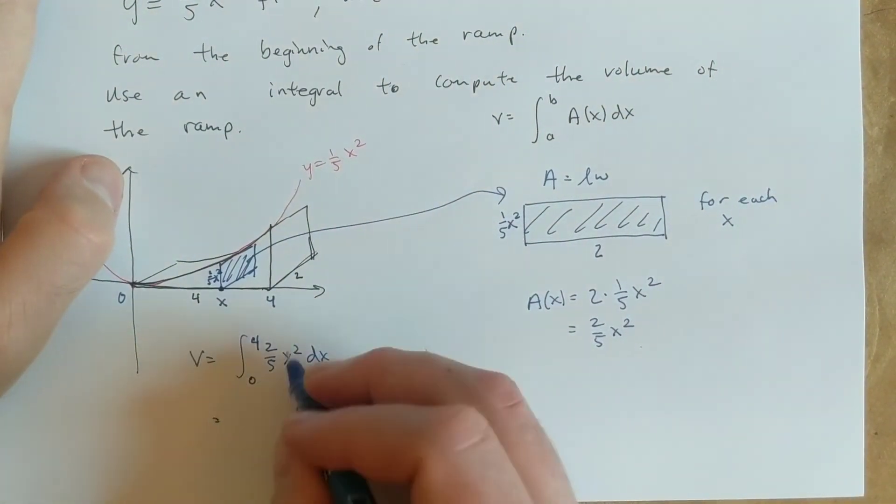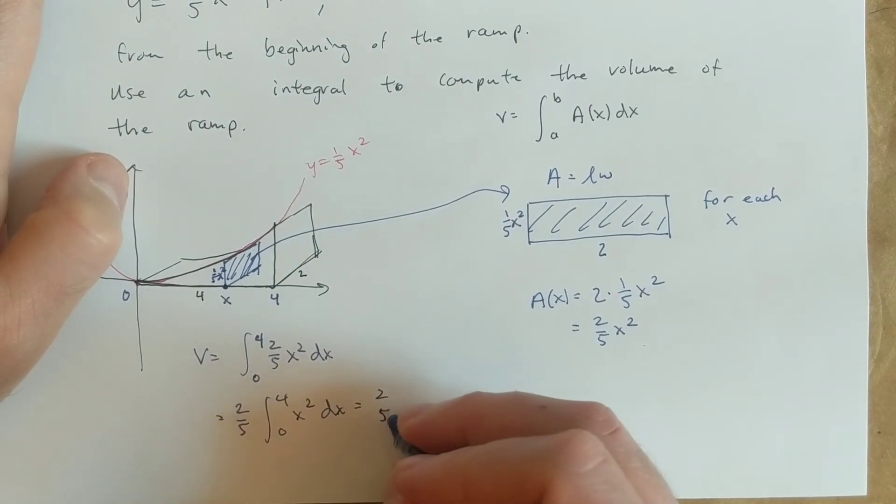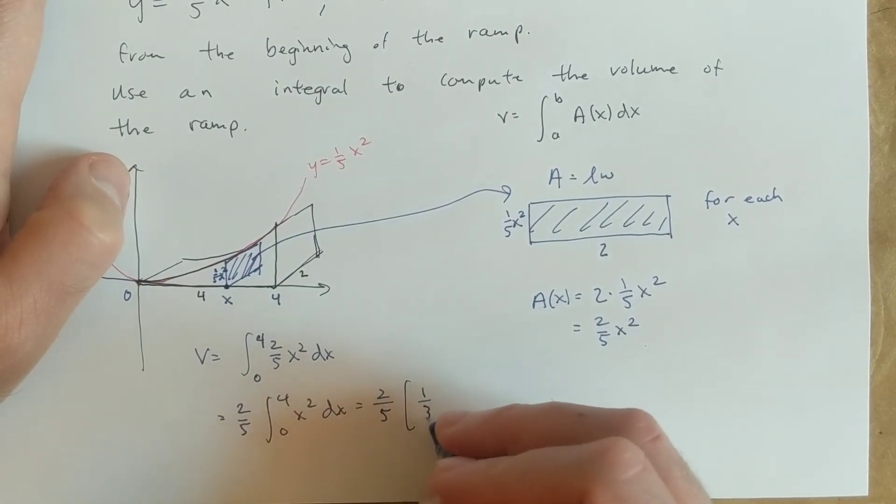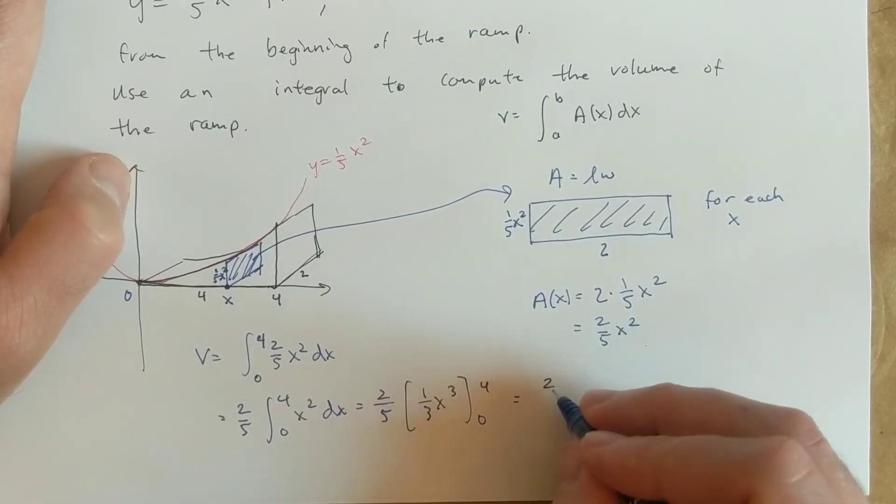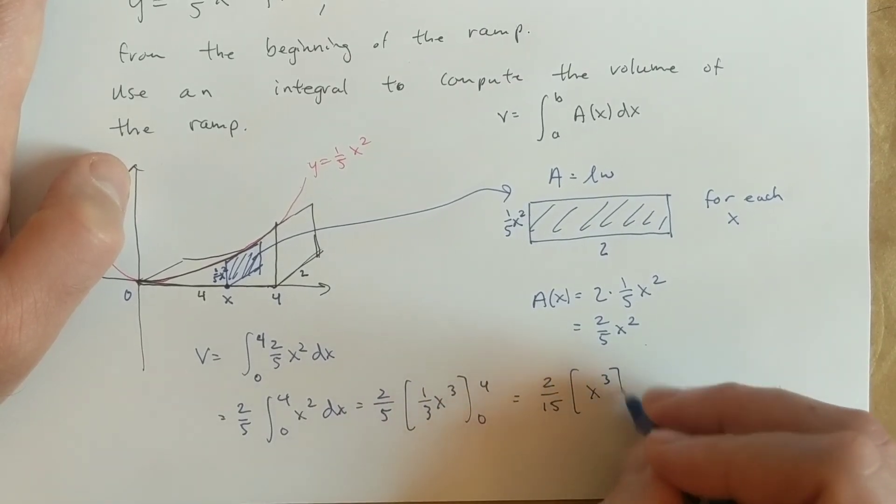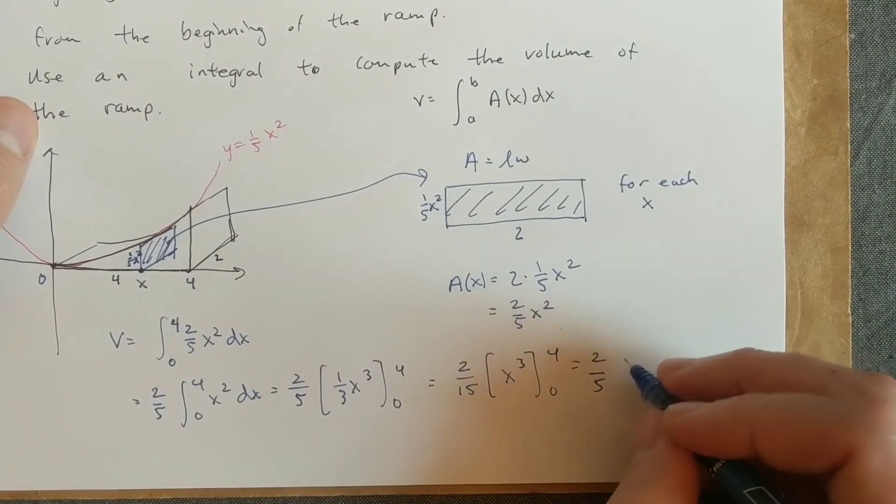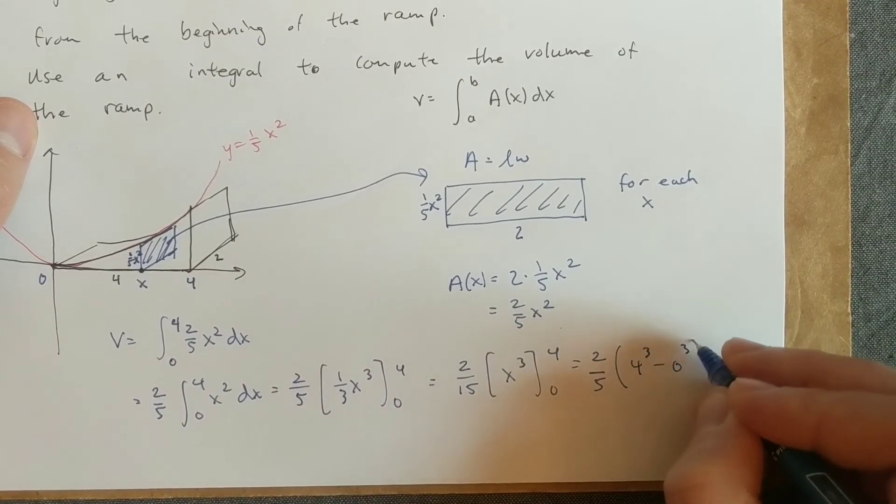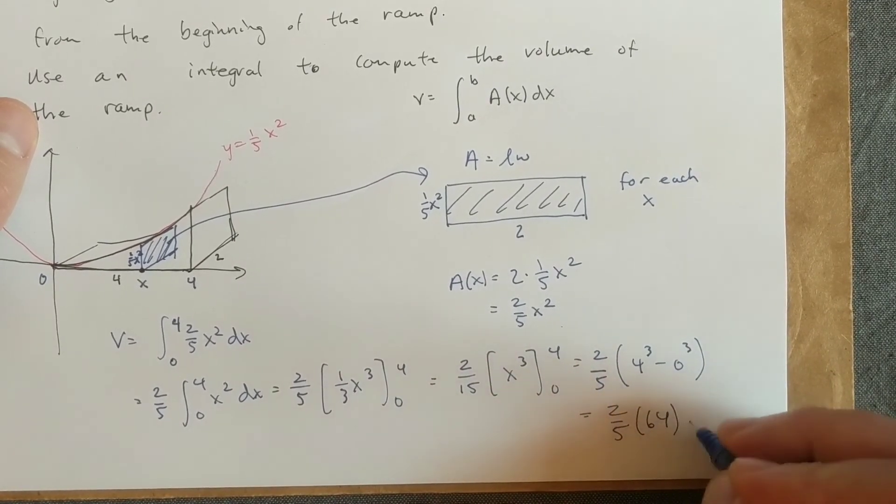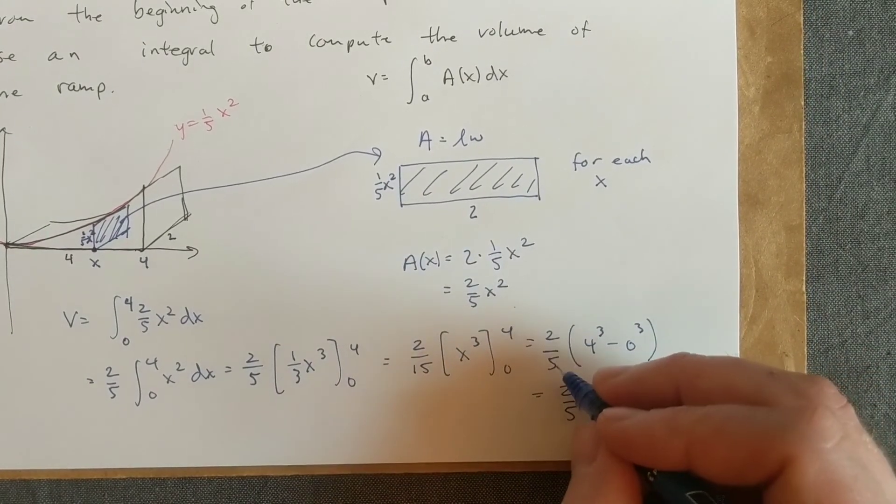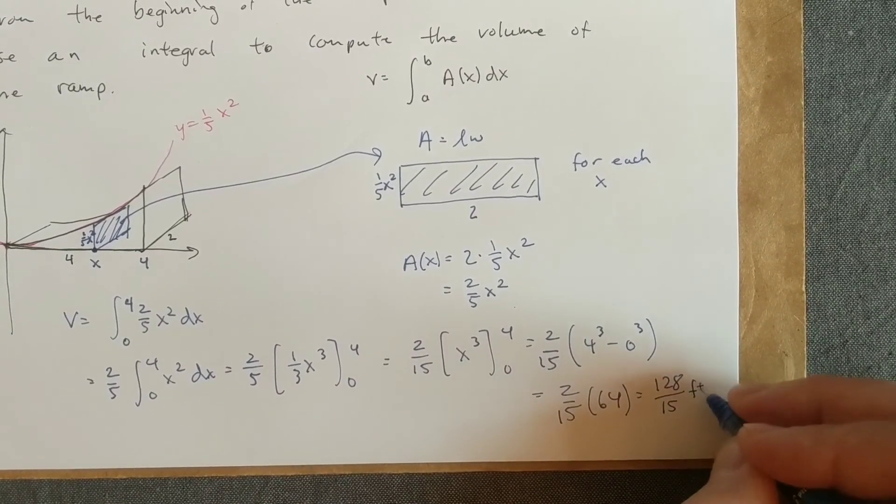Okay, so now we just take the integral and plug these values in. So I'm going to pull the two-fifths out. I'm going to take the anti-derivative. I'm actually going to pull this one-third out too, so I get two over 15. And now let's plug in the values, so four cubed minus zero cubed. So the nice thing about starting at zero is that this will cancel. And so I get two-fifths times 64, which will give me over 15, which will give me 128 over 15. And this will be measured in feet cubed, because we have volume.